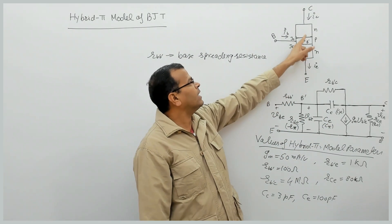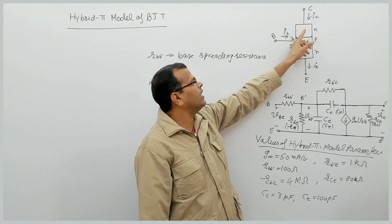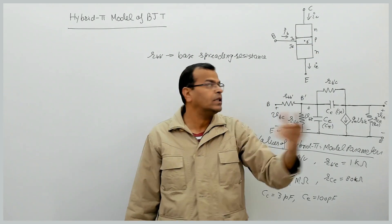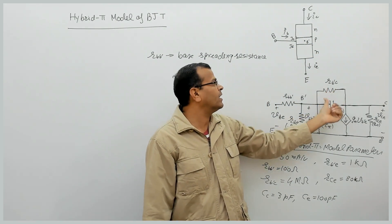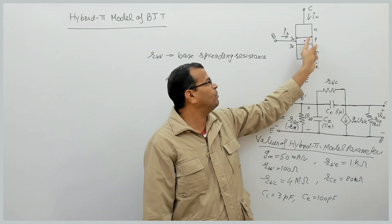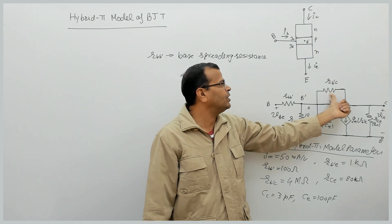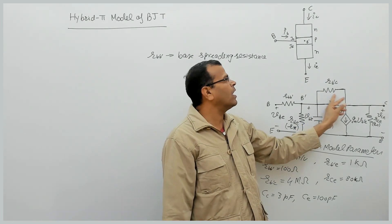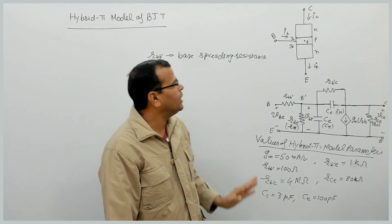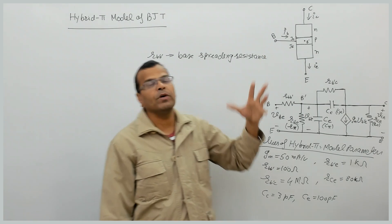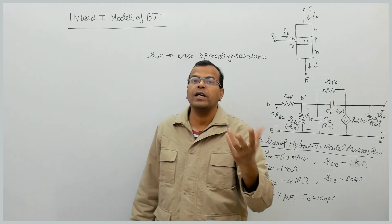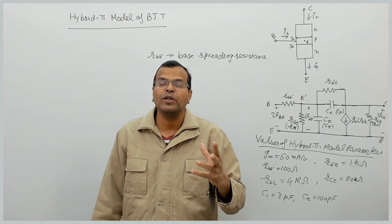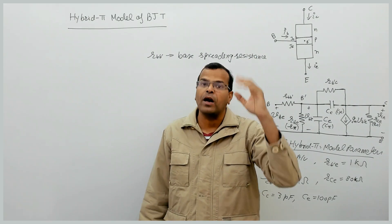There is also a resistance offered by the collector junction. The collector junction is reverse biased, so it will offer very high resistance — R_B'C. Between base and collector, because the collector junction in amplifier applications is reverse biased, this resistance is in the megaohm range.